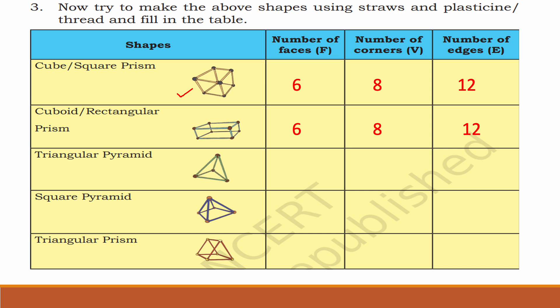For a triangular pyramid: four faces, four corners, six edges. For a square pyramid: five faces, five corners, eight edges. For a triangular prism: five faces, six corners, nine edges.